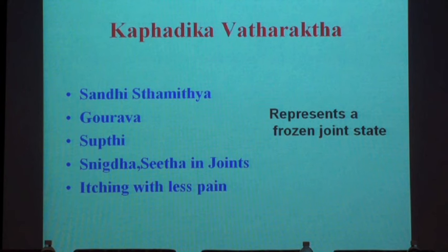Ayurveda believes Chikitsa is Avastha pradhanam. There is no rheumatoid arthritis churnam, there is no rheumatoid arthritis arishtam in Ayurveda. There are so many wonderful Samprapti Vighatana tools which are to be applied depending upon the clinical condition.